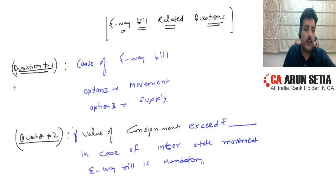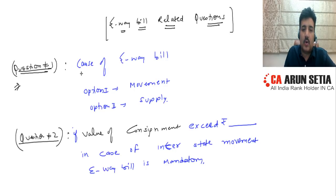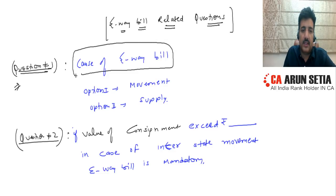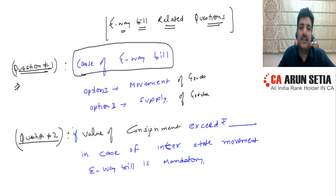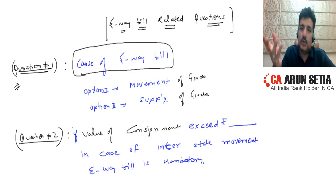Question number 1: What is the cause of generation of e-way bill? Why do we generate an e-way bill? You have two options — Option 1 is because of movement of goods, or supply of goods. Both are correct answers. E-way bill is generated because of the movement of goods or supply of goods. You need to answer one of these two options.